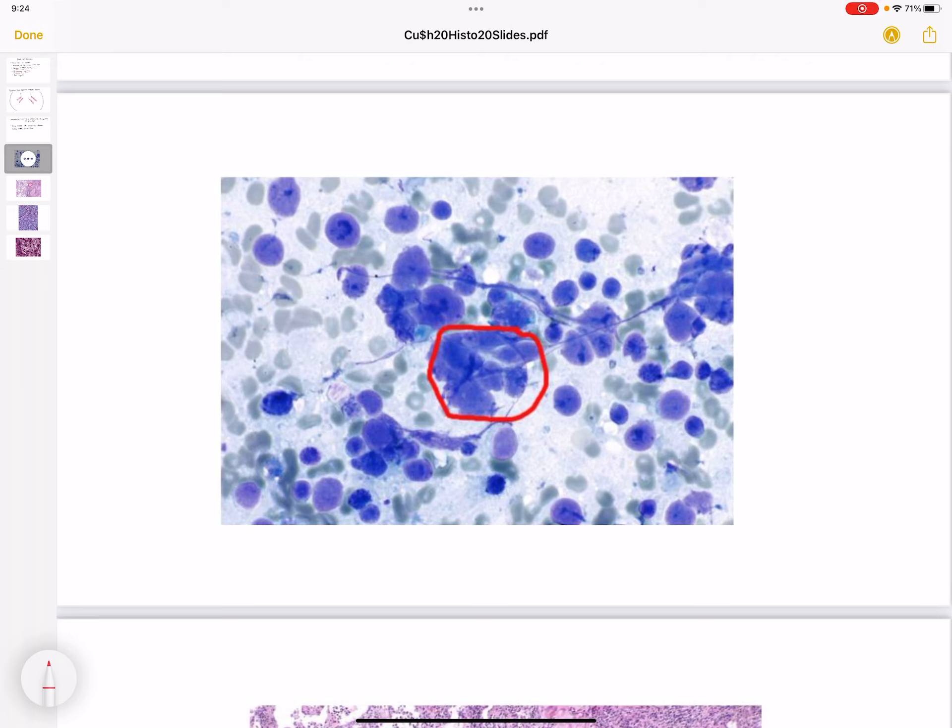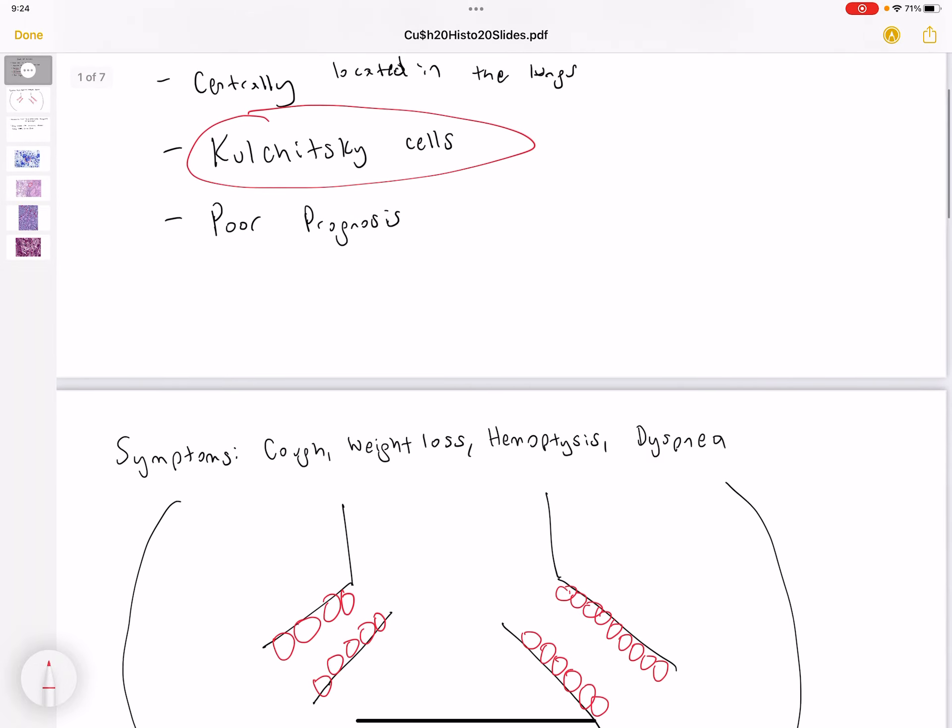As a result, the cancer is going to be very aggressive due to the fact that these cells are very undifferentiated. The more undifferentiated a cancer cell is, the worse the prognosis for the patient. As we said earlier, it carries a poor prognosis.